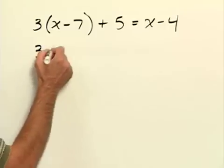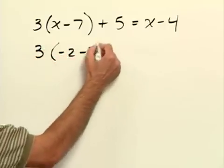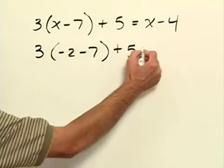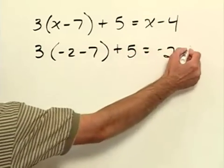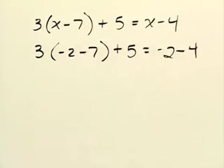So we'll have 3 times negative 2 minus 7 plus 5 equals negative 2 minus 4. From here follow the order of operations and simplify and see if we get the left side to equal the right side.